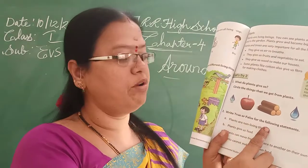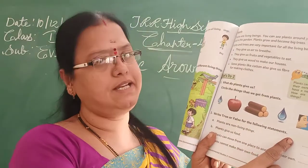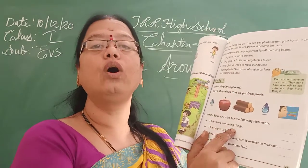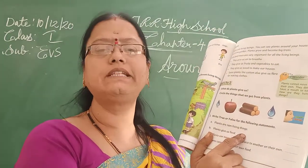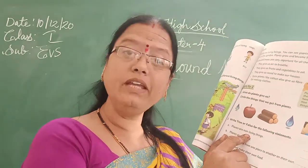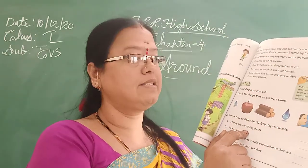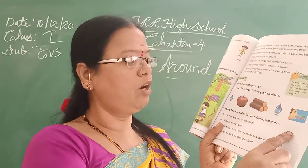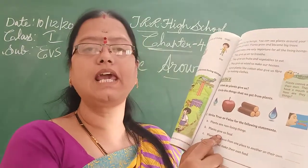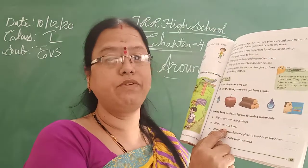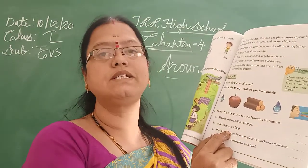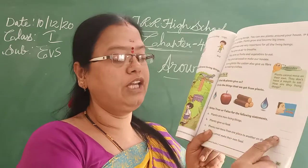Next, write true or false for the following statements. 'Plants are non-living things' — no, plants are living things, so you have to write false. 'Plants give us food' — yes, we learnt in the previous class that plants give us fruits and vegetables, so you write true.